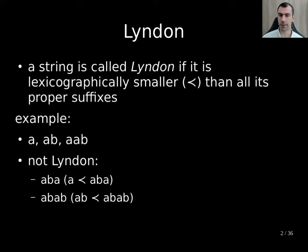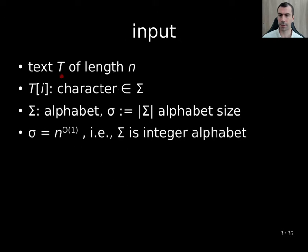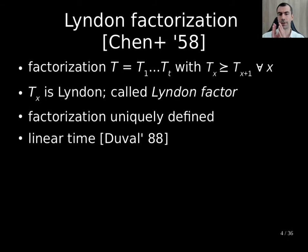In our setting, we assume as input a text T of length n, where the i-th character is from an alphabet sigma, where small sigma denotes its size, and we assume that sigma is integer, meaning that we can bound its size by n to the power of order 1. A powerful tool regarding Lyndon is the Lyndon factorization, which factorizes your text into T factors, where you get a sequence of non-increasing factors with respect to the lexicographic order, where each factor is Lyndon and called a Lyndon factor.